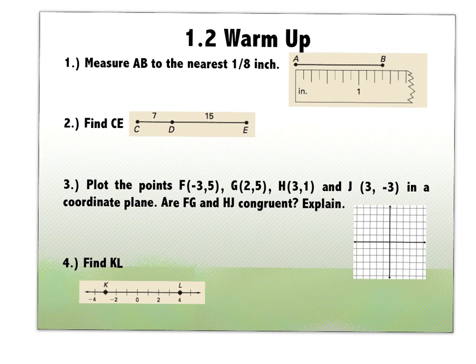All right, so this starts just simply with your measurement. It says measure AB to the nearest eighth inch. So each of these little tick marks would be one-eighths. So if I'm past the one that's one, that's two, that's three-eighths. So this should be one and three-eighths.